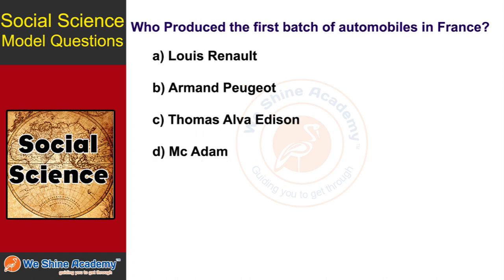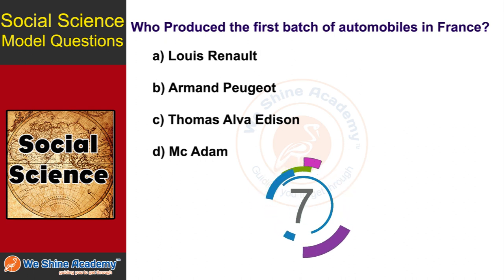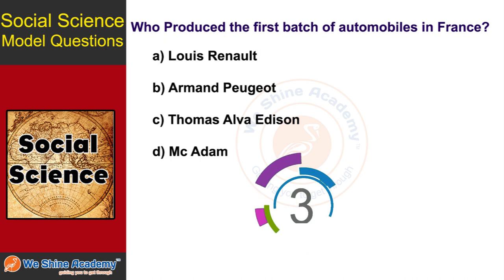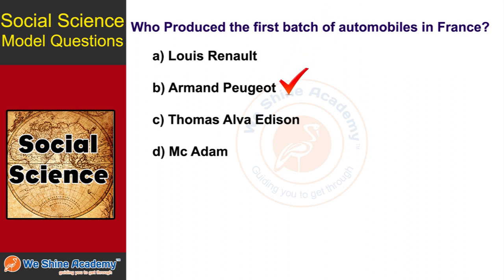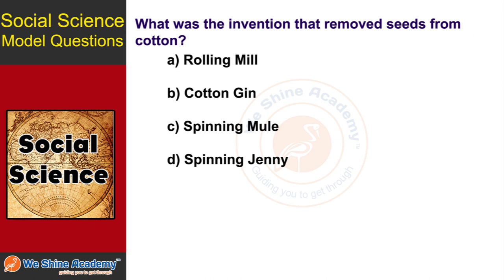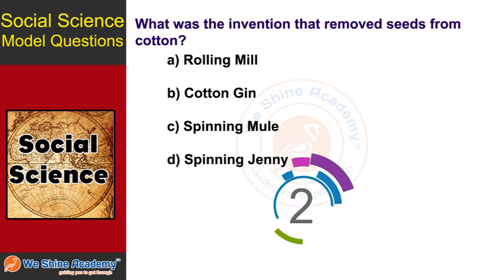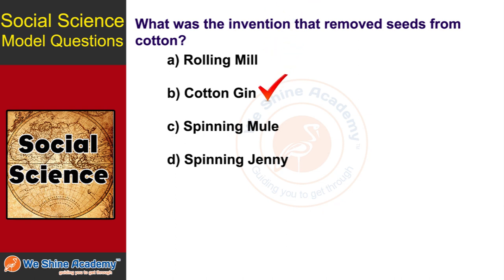The next question is: Who produced the first batch of automobiles in France? The answer is Armand Peugeot. The next question is: What was the invention that removed seeds from cotton? The answer is the Cotton Gin.